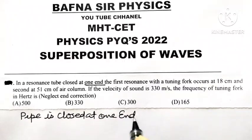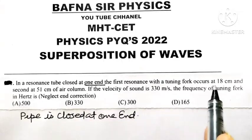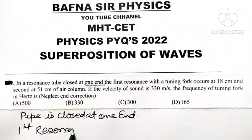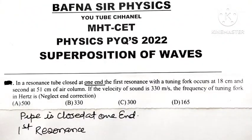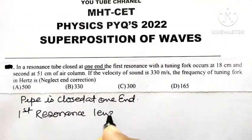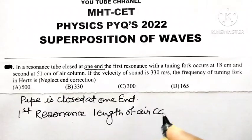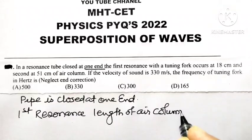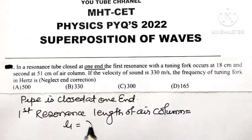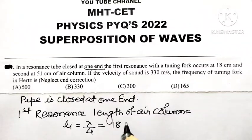The first resonance occurs at 18 cm. For the first resonance, the length of air column L1 is equal to lambda by 4, and it was given as 18 cm.